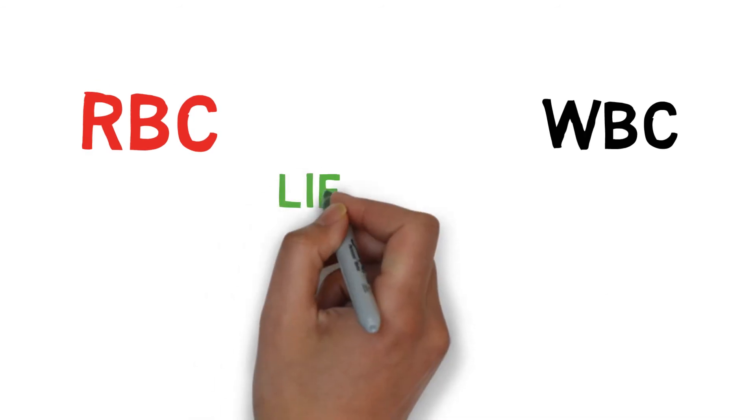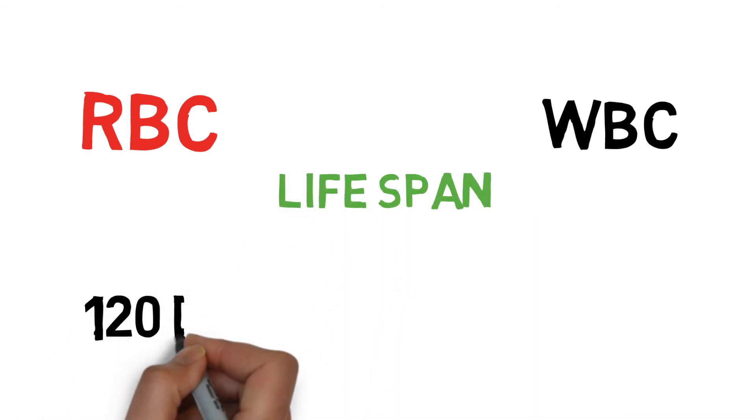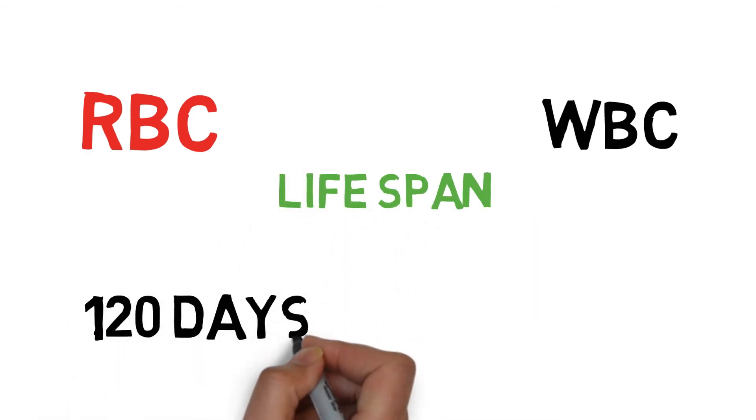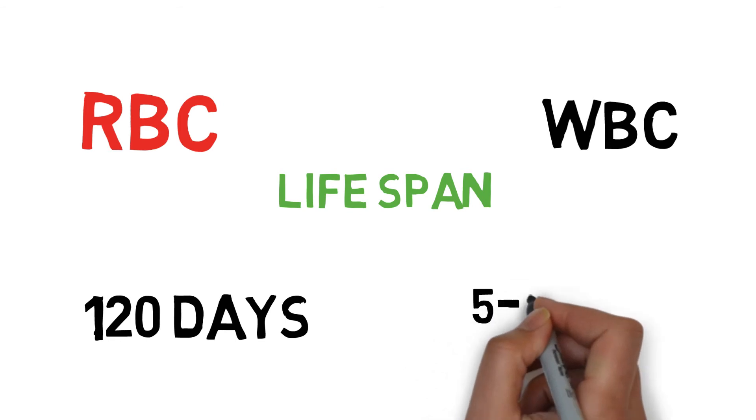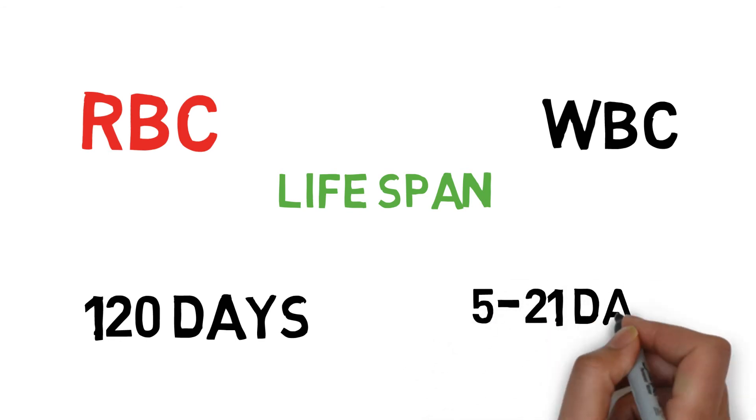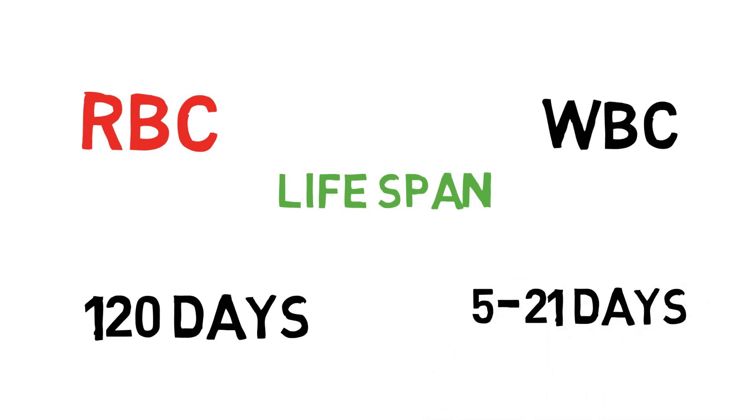The lifespan of a red blood cell is 120 days, and the lifespan of a white blood cell is 5 to 21 days, depending on the type of white blood cell.